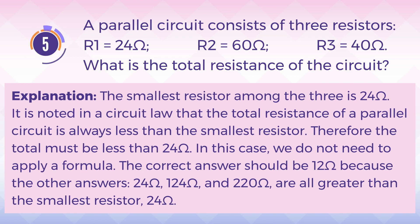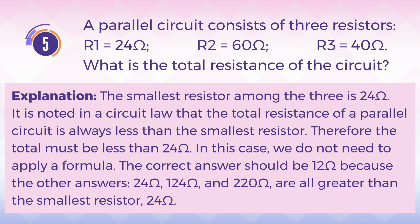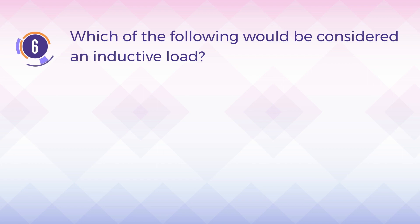Explanation: the smallest resistor among the three is 24 ohms. It is noted in circuit law that the total resistance of a parallel circuit is always less than the smallest resistor. Therefore the total must be less than 24 ohms. The correct answer is 12 ohms, because the other answers — 24 ohms, 124 ohms, and 220 ohms — are all greater than the smallest resistor of 24 ohms.